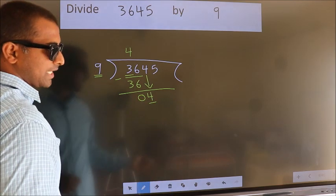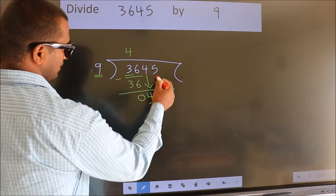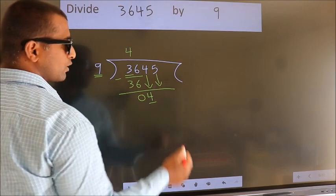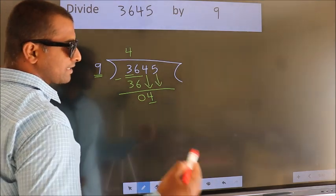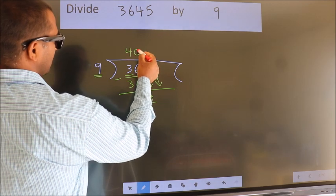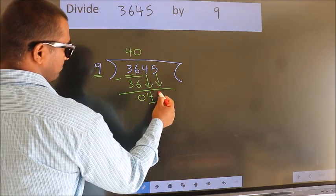So we should bring down the second number. And the rule to bring down the second number is put 0 here. Then only we can bring down this number.